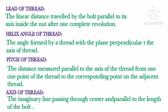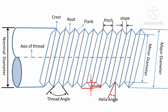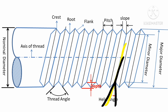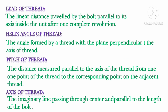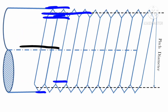The helix angle is the angle formed by a thread with the plane perpendicular to the axis of the thread. In the diagram, the black line is the line perpendicular to the axis of the thread and the yellow line represents the thread. The angle the thread makes with the line perpendicular to the axis is called the helix angle. The axis of the thread is the imaginary line passing through the center and parallel to the length of the bolt.